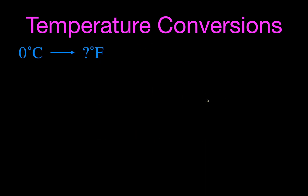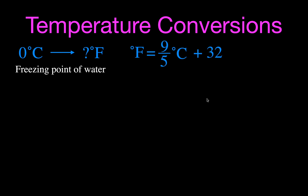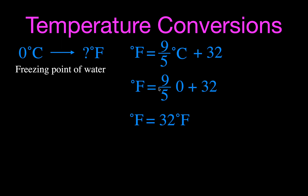The first example: convert 0°C to Fahrenheit. We know 0°C is the freezing point of water. Using our equation, we substitute zero in for Celsius — zero times nine divided by five is zero, so the term is zero. The Fahrenheit temperature is 0 plus 32, which equals 32°F.